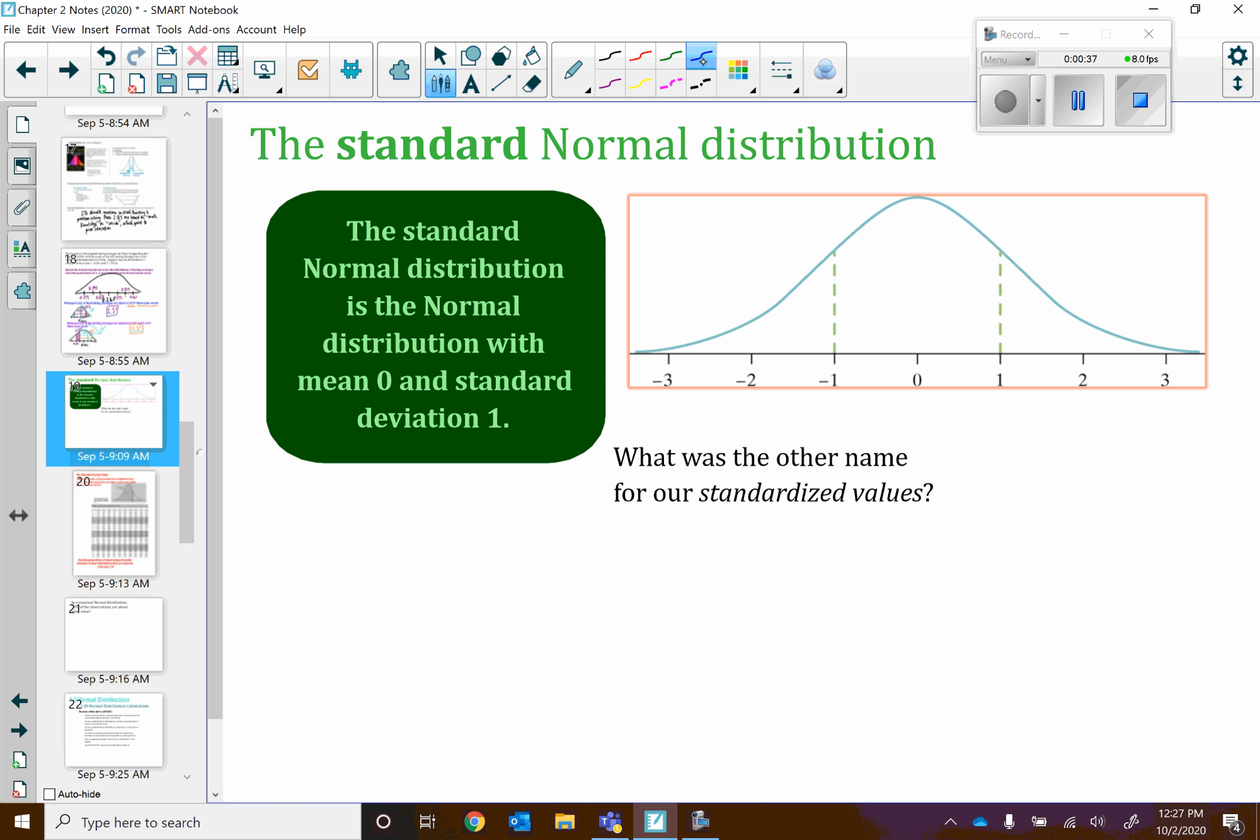So I've got a drawing here of the standard normal curve, mean of 0, standard deviation of 1. And the first question, the most important question, is what was the name that we gave something called standardized values? You've seen that before. What were our standardized values?